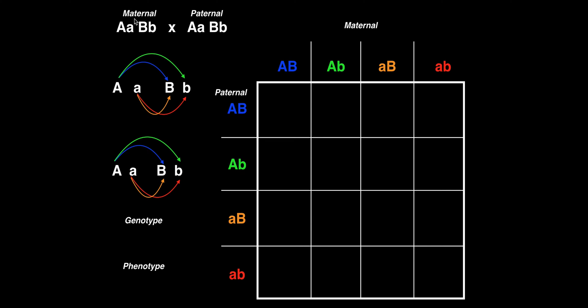I'm going to do a dihybrid cross for genes A and B. A is the gene that codes for height, and B is a hypothetical gene that codes for speed. The maternal genotype is heterozygous for both A and B genes, and the paternal genotype is also heterozygous for both of them. So we've got maternal big A little a, big B little b, and paternal big A little a, big B little b.